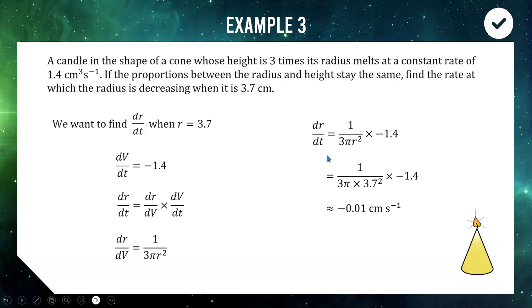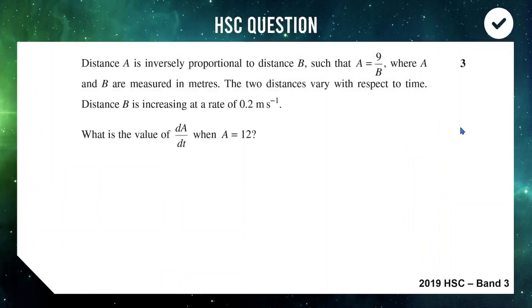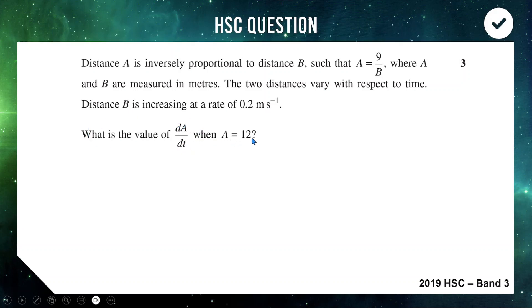Let's finish off with a couple of HSC questions — an easier one and a tougher one. Here's the easier Band 3 one from 2019, worth 3 marks. Distance a is inversely proportional to distance b, so a = 9/b. A and b are in metres and vary with respect to time. Distance b is increasing at 0.2 metres per second. What is the value of dA/dt when a = 12?